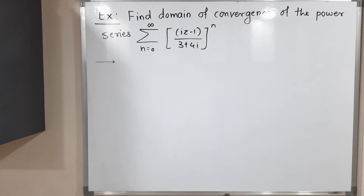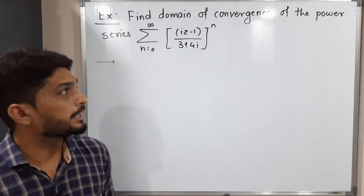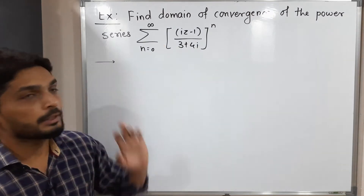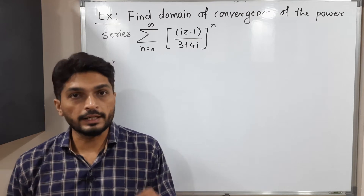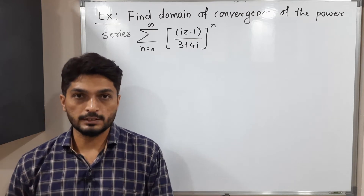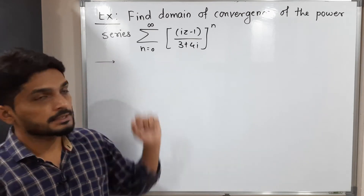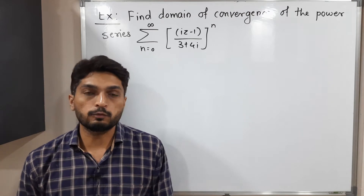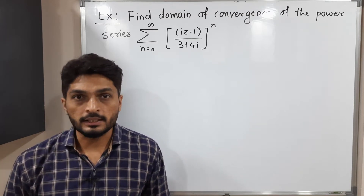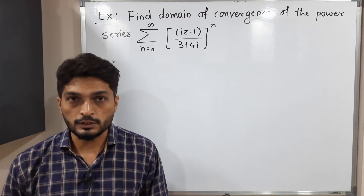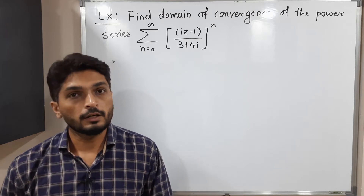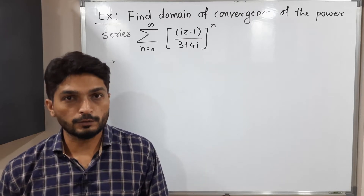Hi everyone, let us discuss this example. In this example, we have a power series and we have to find the domain of convergence. For that, we need to first find the radius of convergence. The given power series is not in its standard form, so let us express it in standard form. Then we will find the radius of convergence and using it, we will find the domain of convergence.